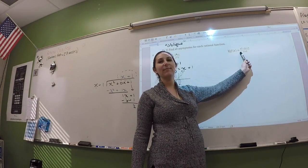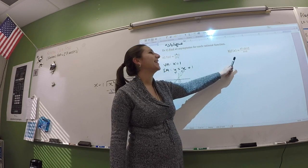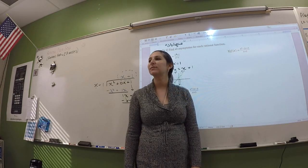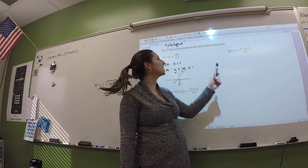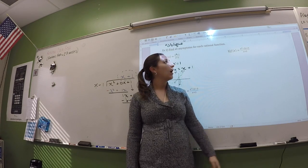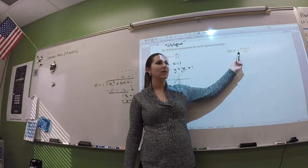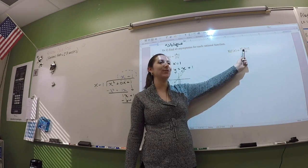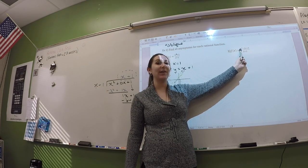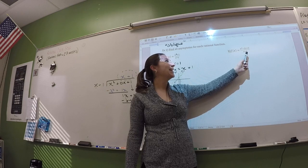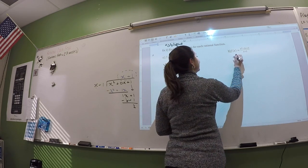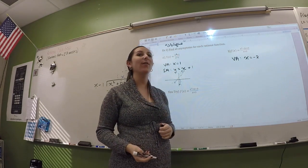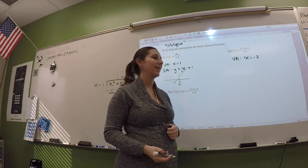Alright, let's do another one. Step one — can we factor? What multiplies to five and adds to negative two? Nothing. So we can't simplify — no holes. Vertical asymptote: x equals negative two. Is it a slant asymptote or a horizontal asymptote? Slant. So long division: what do you multiply x by to get x squared? X. Multiply: x squared plus 2x. Subtract and get negative 4x, then bring down. What do you multiply x by to get negative 4x? Negative 4. So your slant asymptote is y equals x minus 4.